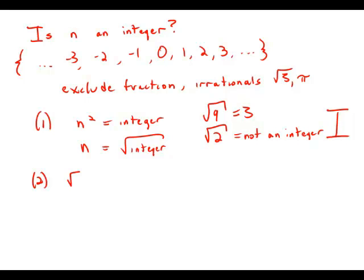Statement number two tells us that the square root of n is an integer. So again, to solve for n, we just square both sides. n equals an integer squared. Well, when you square an integer, you always get another integer. So this is an absolute guarantee that n is an integer. So this statement is perfectly sufficient.